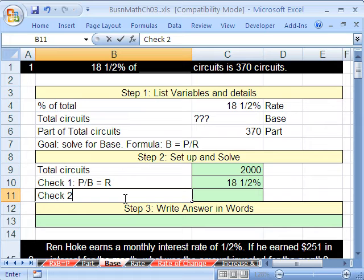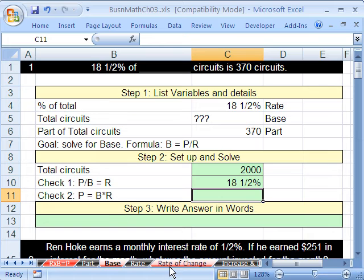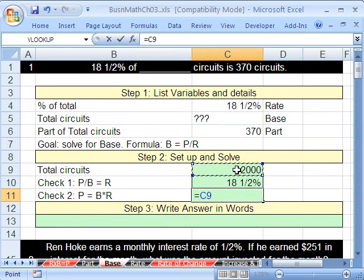Now check number two, and we solved for rate, so now we're going to solve for part, try and get the original source number part. So part equals our base times our rate. Tab, equals, well we have our base we just solved for times, and we'll check it against this number here, and we better get this number.